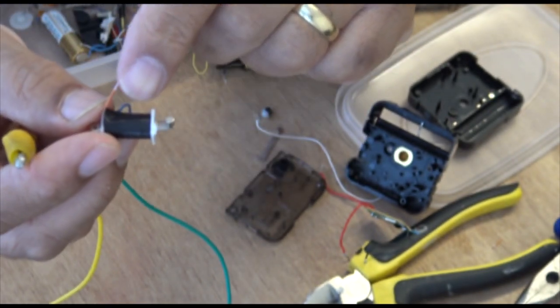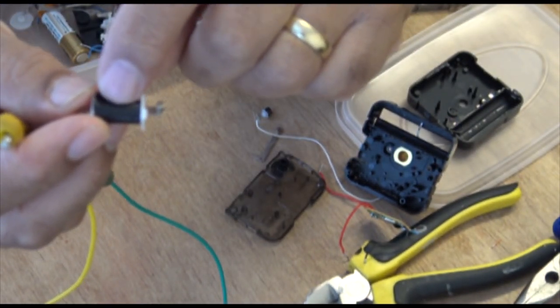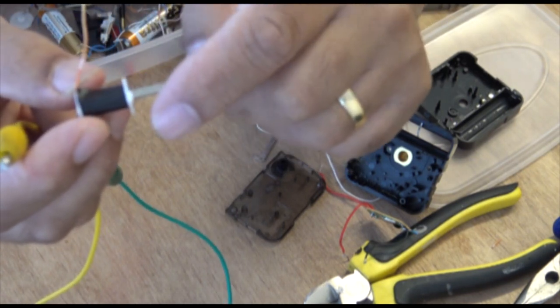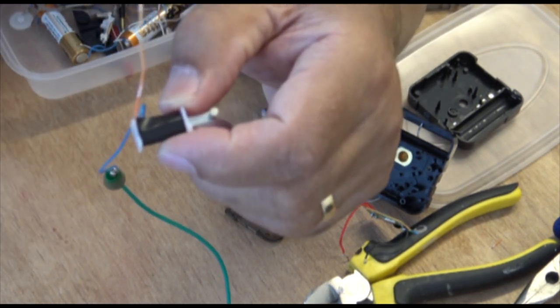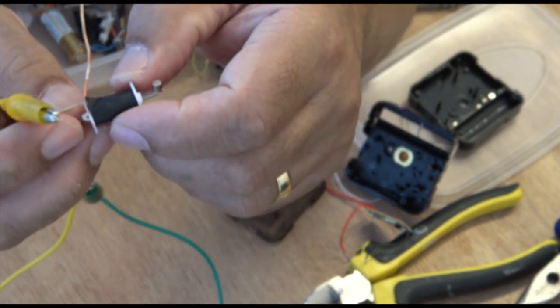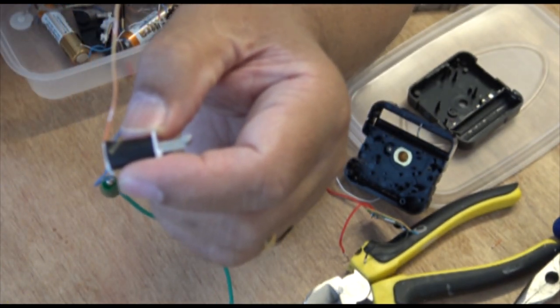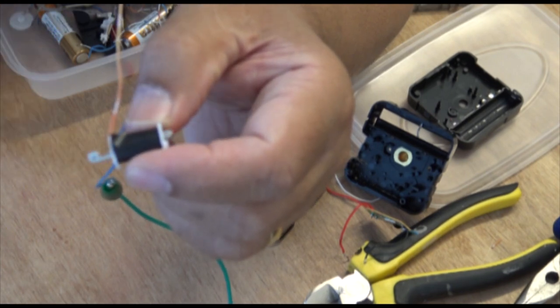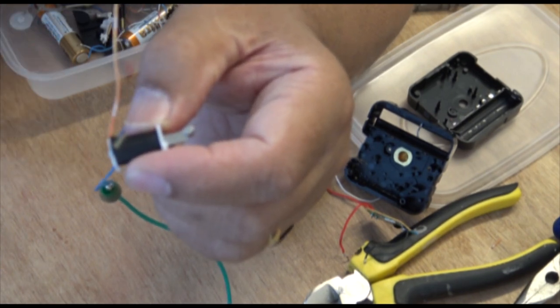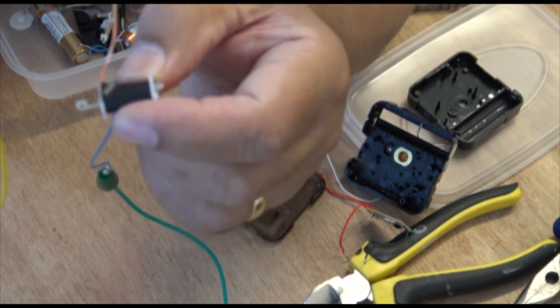But when I put 1.5 volts on here, it wasn't as powerful as it's supposed to be, so I'm actually at this moment putting 6 volts through it. I think it'll be okay to work on 6 volts for a while because it's not going to be on constantly. So if I put 6 volts, you can hear it. Look, I don't know if you can hear that. It's pretty powerful going in.